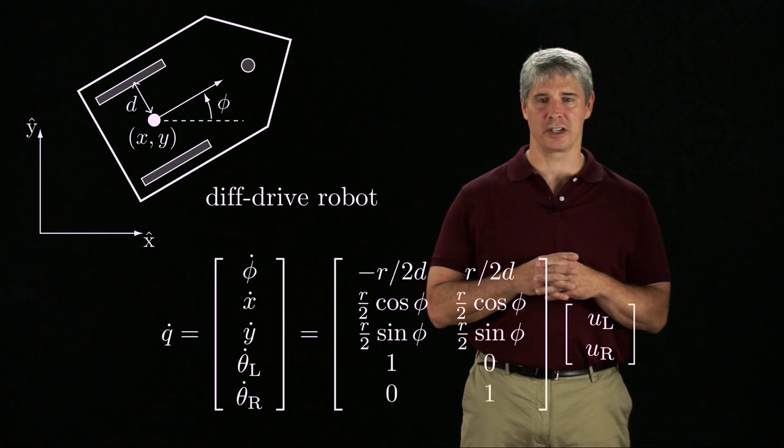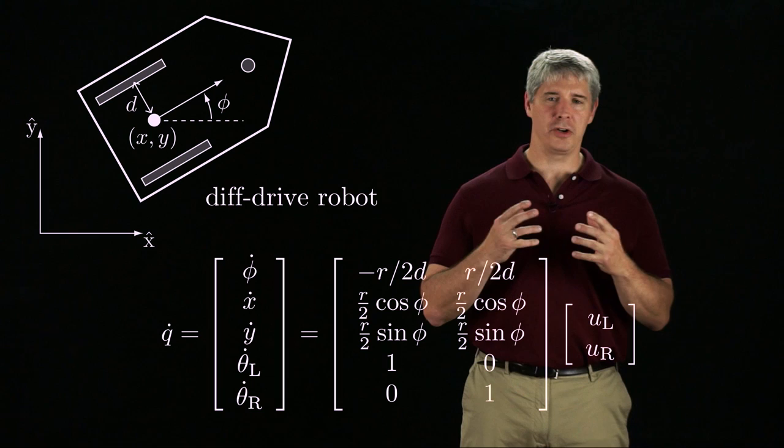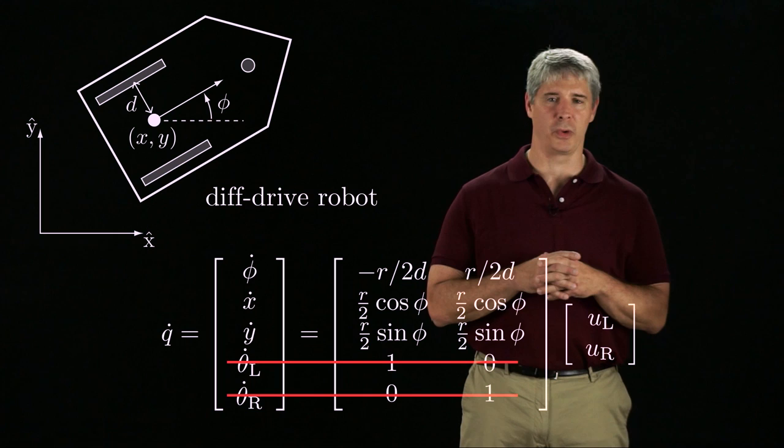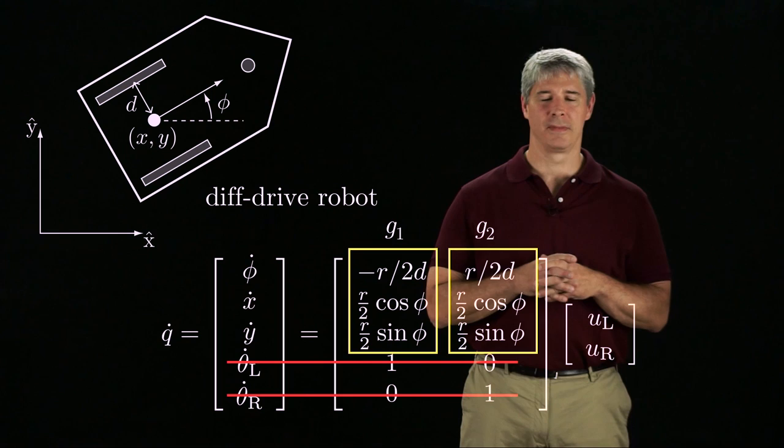the kinematic model is given by this G of Q matrix times the controls, which are the left and right wheel velocities, UL and UR. Usually we don't care about how far the wheels have rotated, so we can scratch the bottom two rows of the equation. The two columns of the G matrix are the control vector fields.